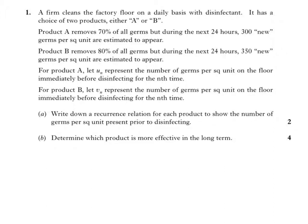Section 17, question 3. A firm cleans the factory floor on a daily basis with disinfectant. There's a choice of two products, either A or B. Product A removes 70% of all germs during the next 24 hours, 300 new germs are estimated to appear, so added on. Product B removes 80% and 350 are added on. For product A, which is the first one, let U_n represent the number of germs on the floor immediately after disinfecting for the nth time, number of germs per square unit. And then for product B, same goes, write down a recurrence relation for each.